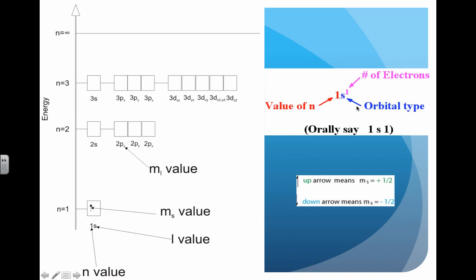This is our complete configuration. This tells us the quantum level, this tells us the type of orbital, and this tells us the number of electrons within the orbital.